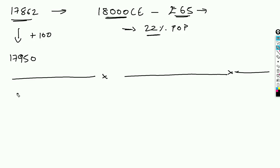When an option moves from OTM to ATM or ITM, we see a 10 or 20 rupee option exploding all the way to 200 or 300 rupees — this is mainly possible because of gamma. When the market starts to go up, on one side delta is pushing option prices higher. On the other hand, gamma is also making the delta increase, which adds a compounding effect to our options. This is the second Greek, gamma.